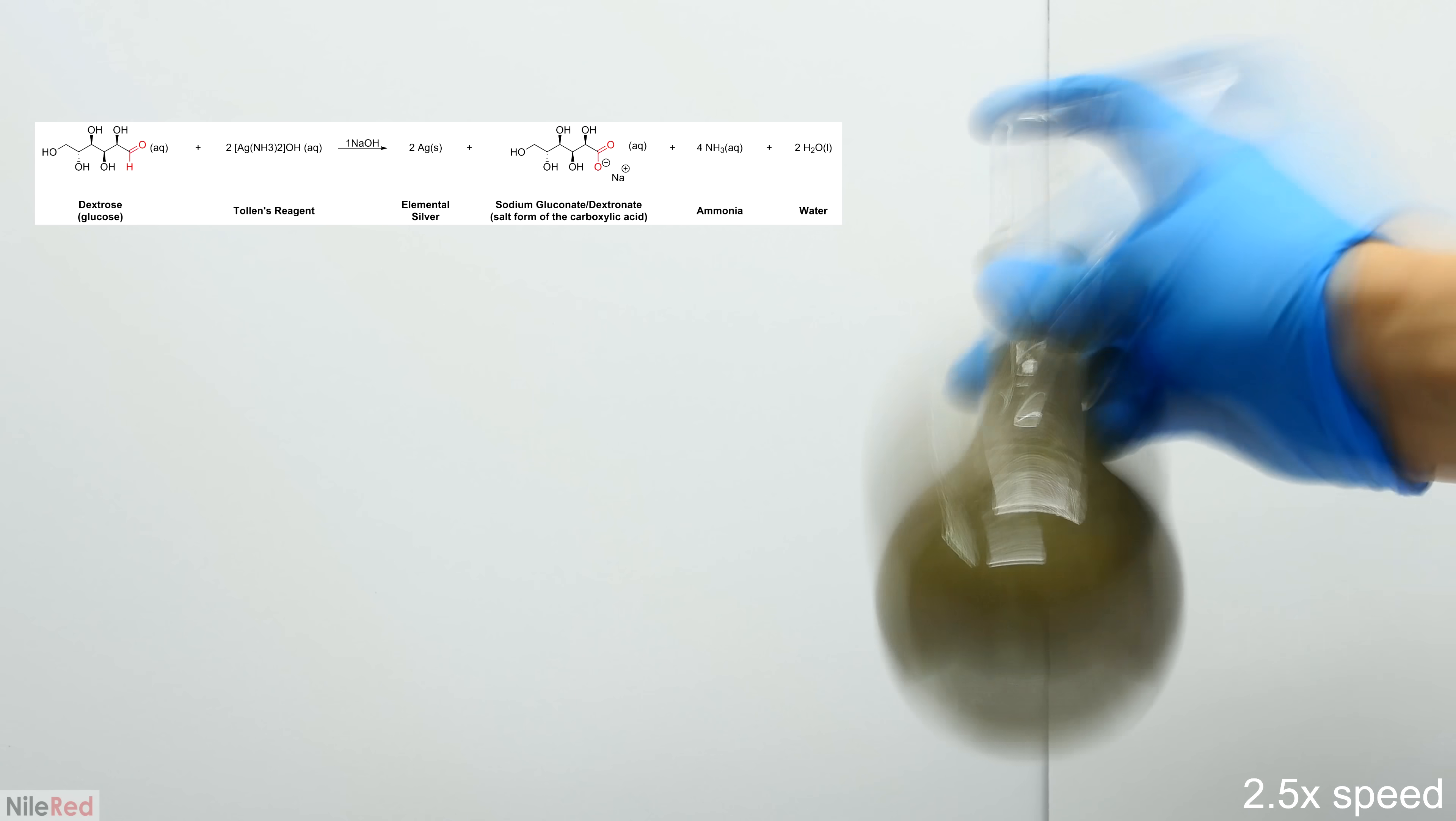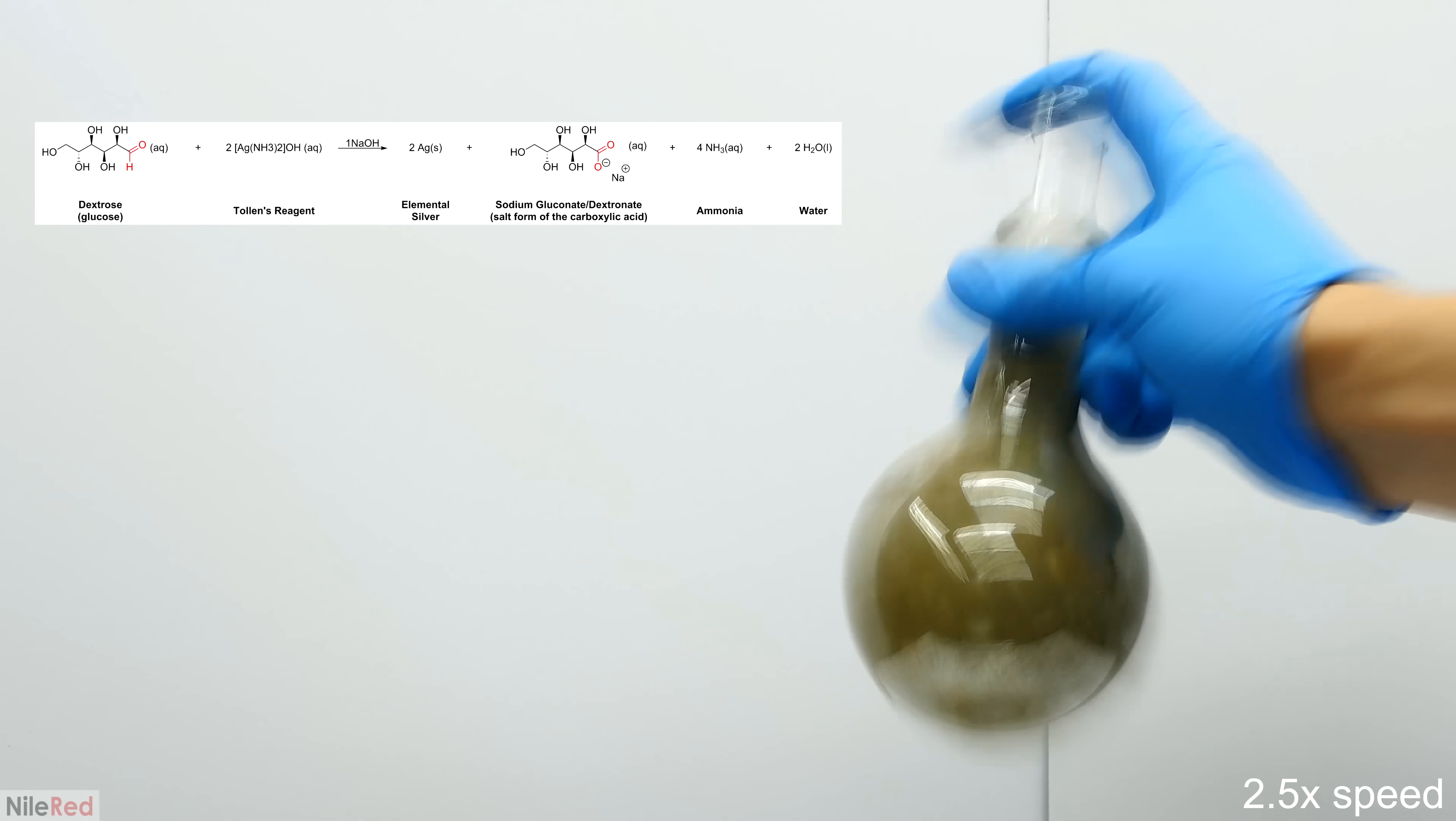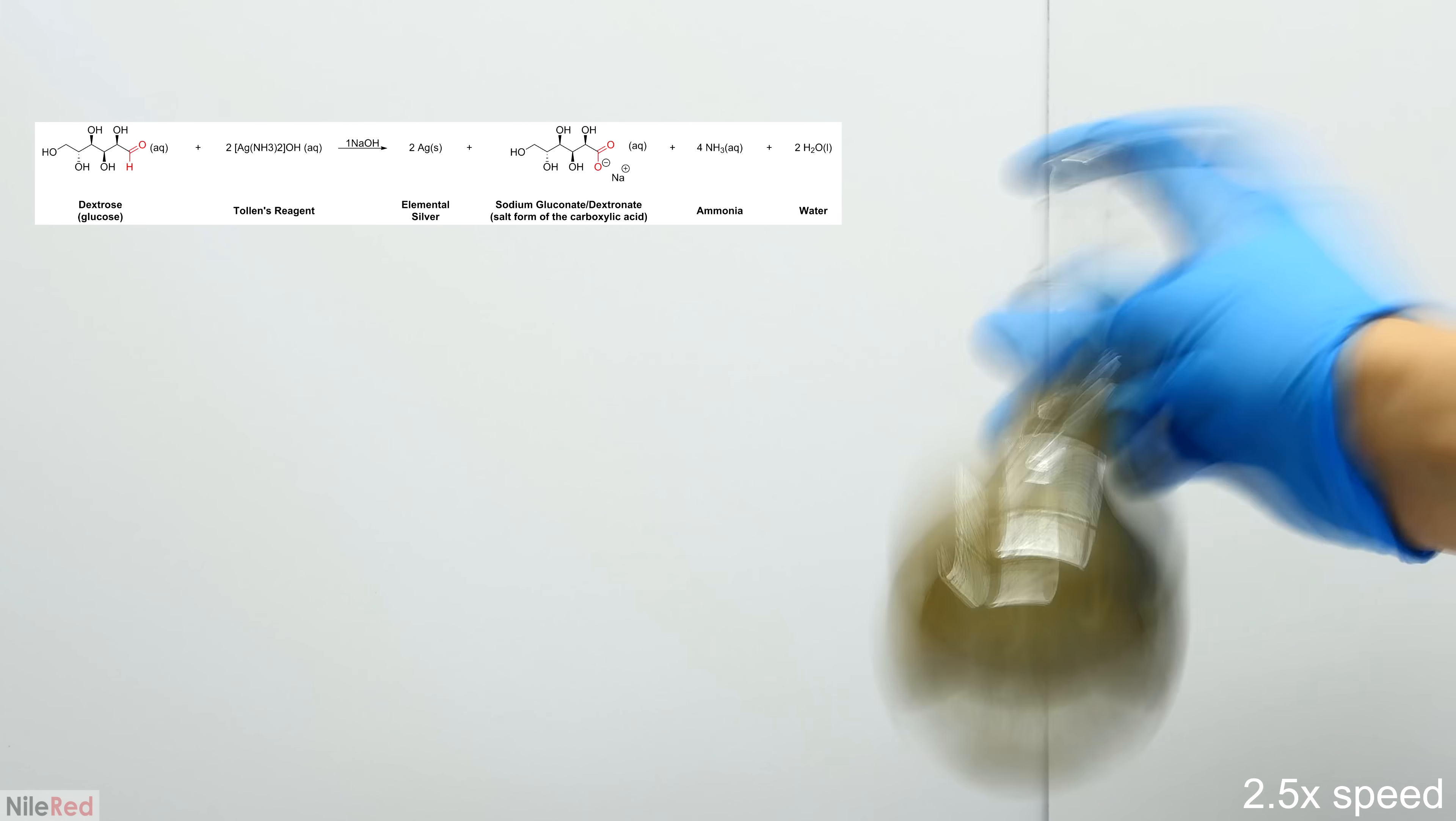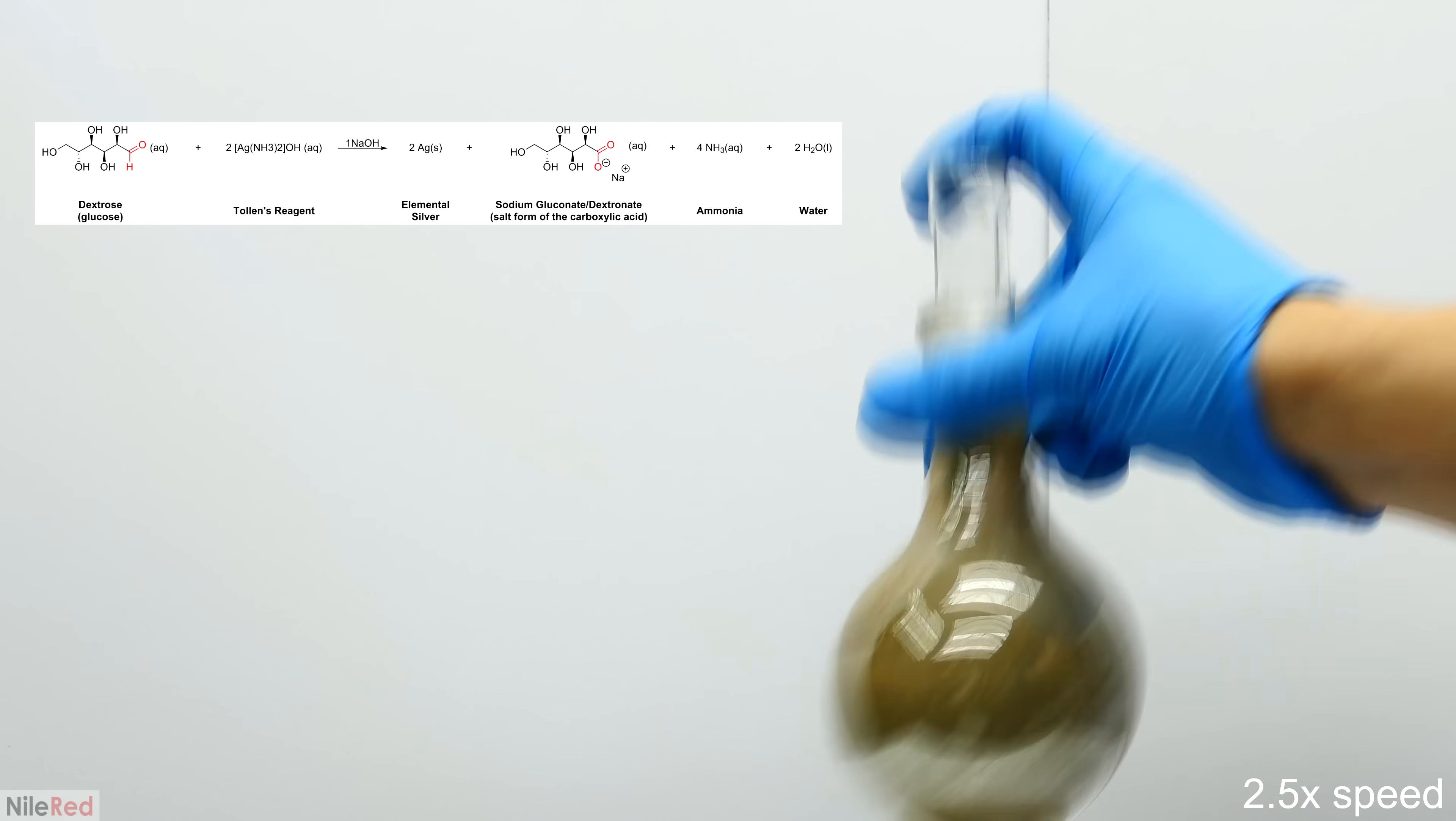When the Tollens reagent is reduced, the complex will fall apart, and the silver will be reverted back to elemental silver. As the silver is formed, it precipitates as a very fine particulate, which slowly settles on the walls of the glass.